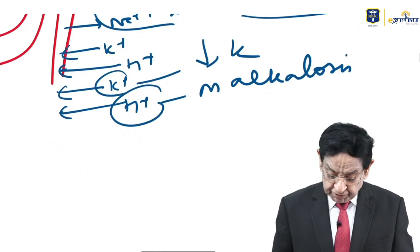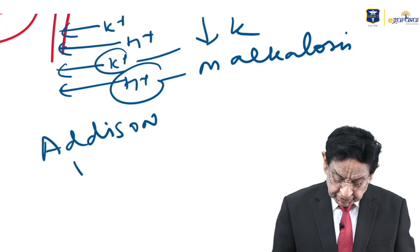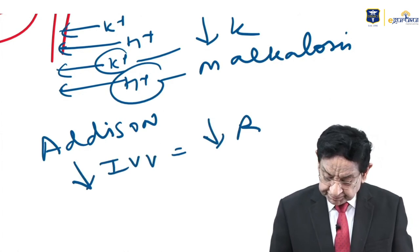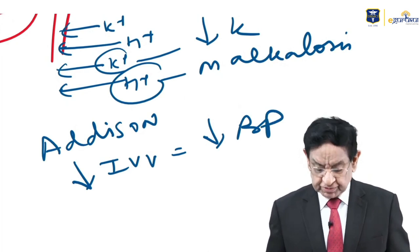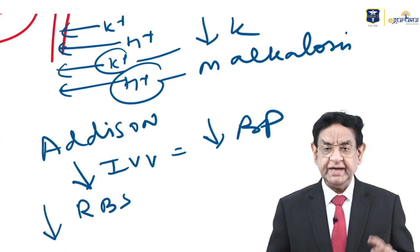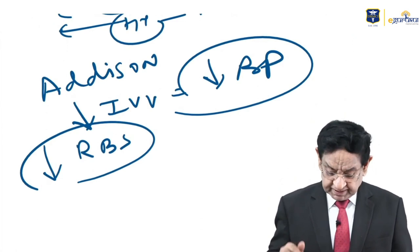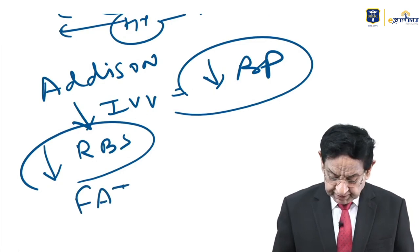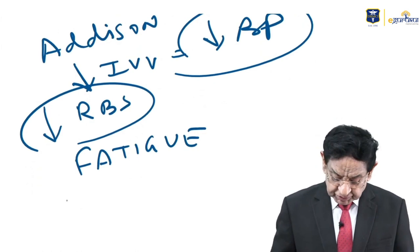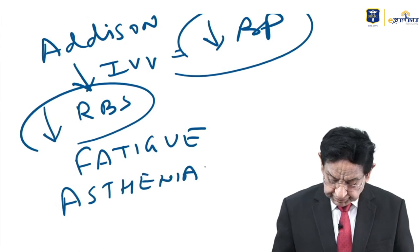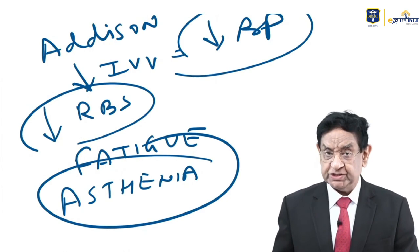In Addison disease, potassium is retained because sodium isn't being reabsorbed, leading to hyperkalemia. Hyponatremia occurs because sodium isn't reabsorbed. Hyperglycemia is not a feature of Addison disease — hypoglycemia is. Other features include hyperpigmentation, because in Addison disease ACTH is elevated and ACTH has MSH-like activity, causing increased pigmentation.